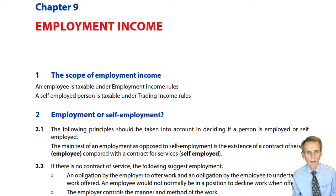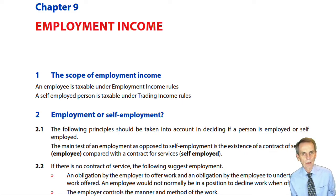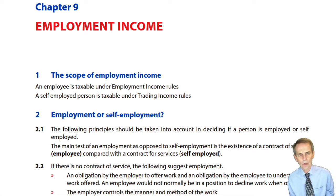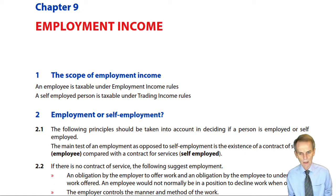In the previous five chapters, we dealt with the complexities of the unincorporated trader — which could be a sole trader or a partnership. We had to sort out first what figure of trading profit made by the business would be chargeable to tax: the adjustment of profit process, which involved computation and deduction of capital allowances, to establish a tax-adjusted trading profit for an accounting period.